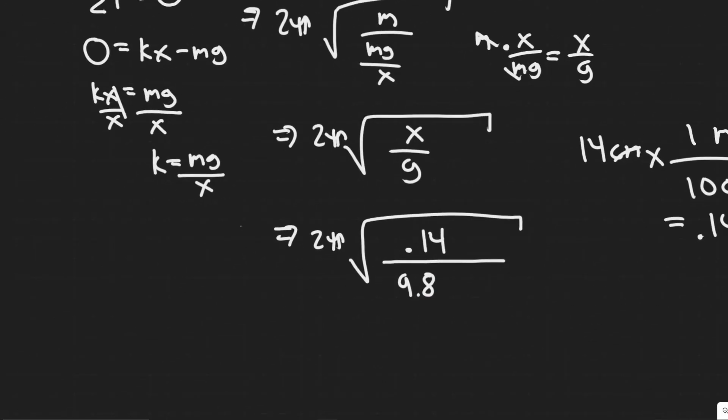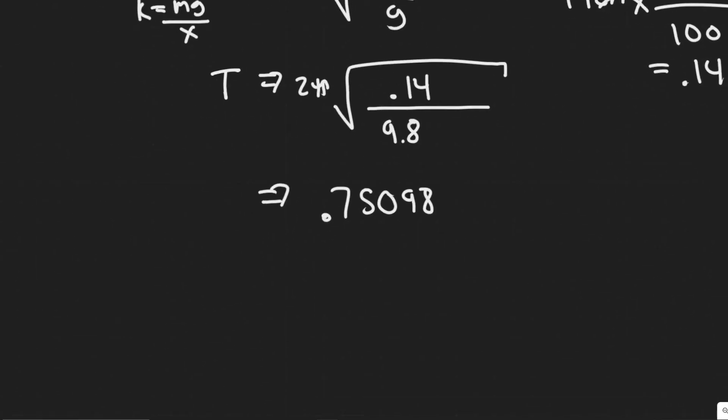And yeah, so keep in mind that all this was solving for T. So it's just a matter of plugging it in now. So 2 times π multiplied by the square root of 0.14 divided by 9.8. Let me redo that. I actually inputted it wrong. 2 times π multiplied by the square root of 0.14 divided by 9.8. So yeah, when you do this, you're going to get a value of 0.707590, or sorry, 75098.